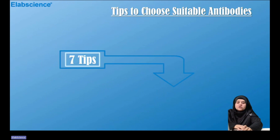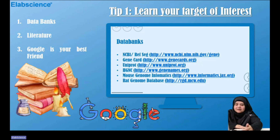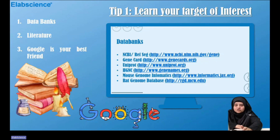Here are seven important tips to choose an antibody. First, you must learn your target protein very well. Gather all available data from platforms like NCBI, GeneCards, UniProt, Mouse Genome Informatics, and Rat Genome Database. Then look in peer-reviewed published articles in international journals. And remember, Google is a strong ally in this quest.